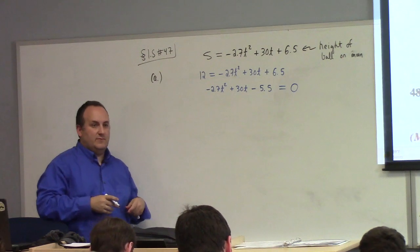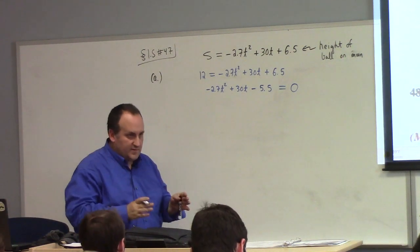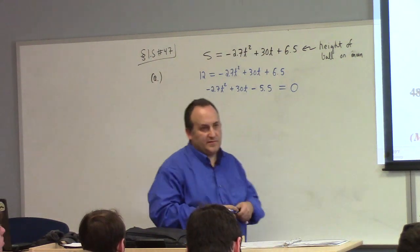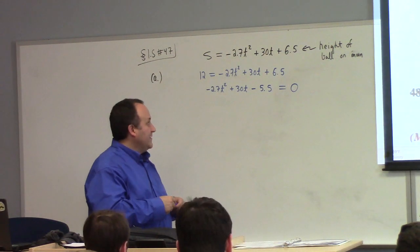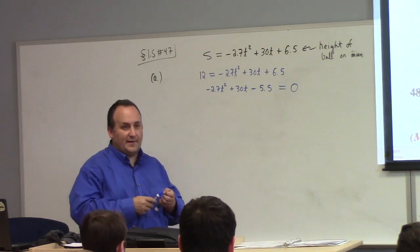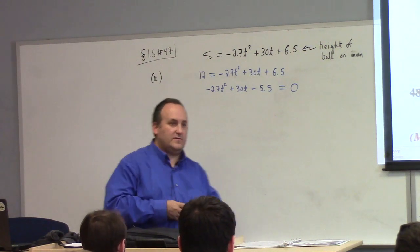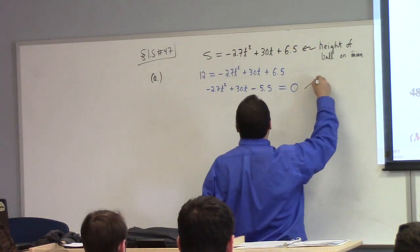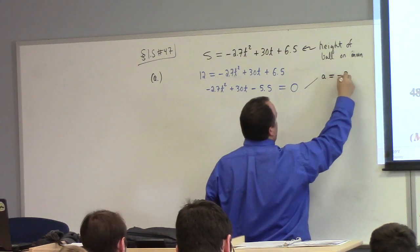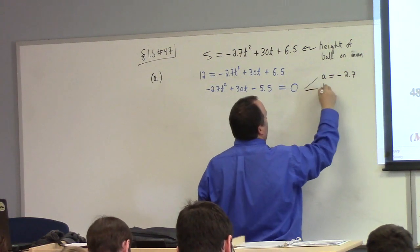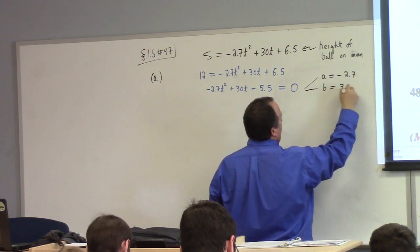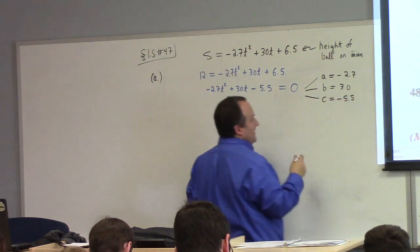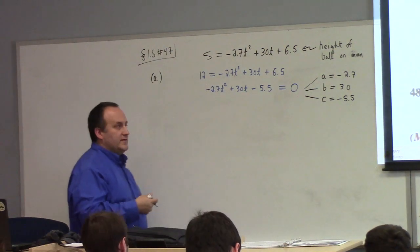Now, you won't find me saying this much in here, but this is a problem for the quadratic formula. It's got ugly decimals. It's got minus signs. Completing the square here would be a total drag. So I wouldn't do it. I would use the quadratic formula. I'm going to identify what I'm up against. I have A as minus 2.7. I have B is 30. I have C is minus 5.5, in the ABC of the quadratic formula.